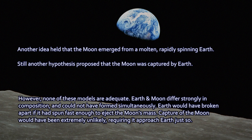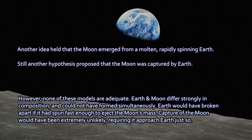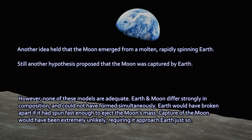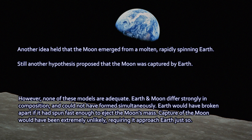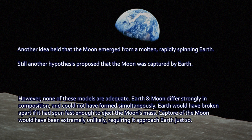None of these alternate hypotheses worked. The Moon differs strongly in composition from the Earth, so it doesn't seem like it could have formed simultaneously with the Earth. Earth would have broken apart if it was spinning fast enough to produce a Moon, and the Moon would be very difficult to capture. So that's not a very satisfactory explanation.